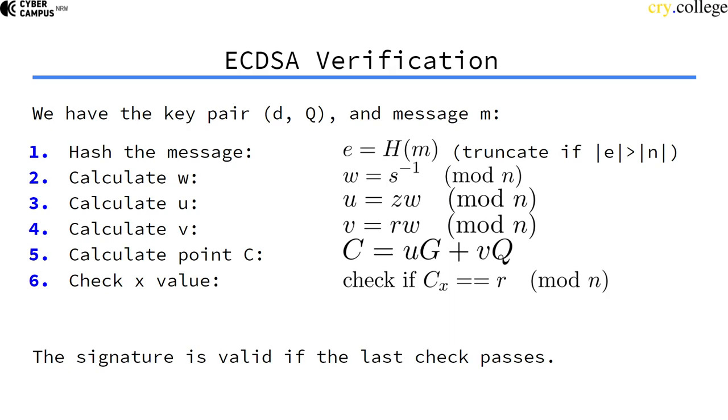And verification, the same thing. We calculate a curve point with the help of S, and then we check if the X value of the computed curve point is equal to R. If that's the case, the signature is valid.